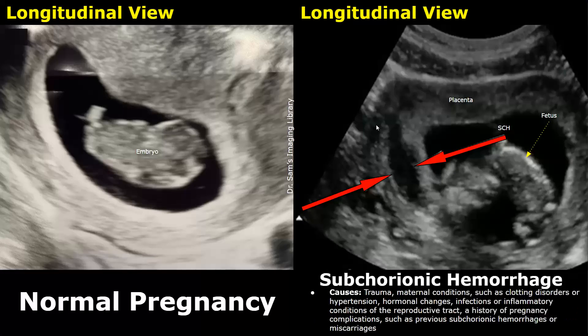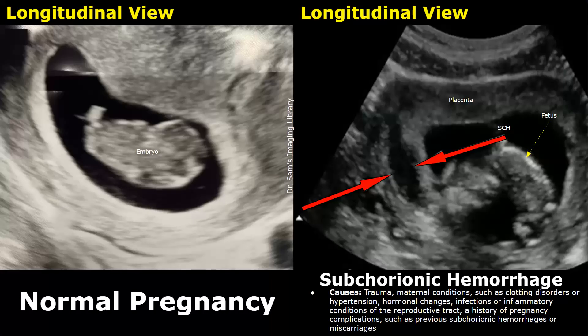Causes of subchorionic hemorrhage include trauma and direct injuries, maternal conditions such as clotting disorders or hypertension, hormonal changes, any infections involving the reproductive tract, and any history of previous pregnancy complications such as a previous subchorionic hemorrhage or a miscarriage.